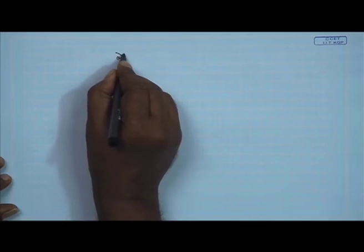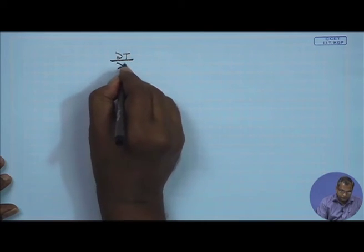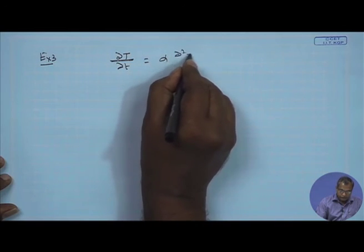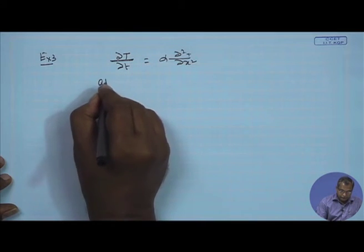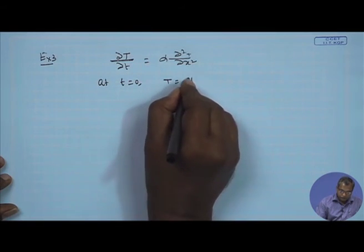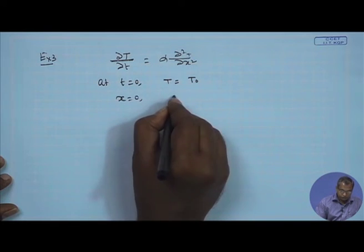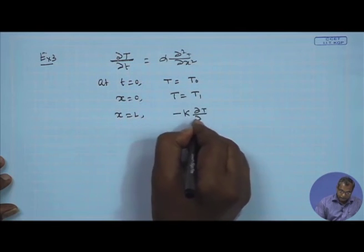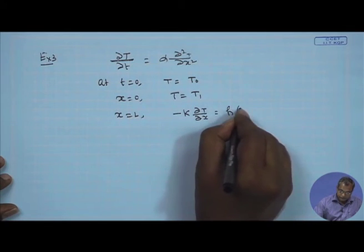Next I will take up one more example to demonstrate various solution types using separation of variables. This will be a practical problem with a Robin mixed boundary condition — a one-dimensional transient heat conduction problem. The governing equation is alpha del²T/del x² = del T / del t.